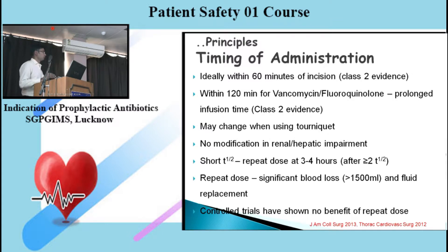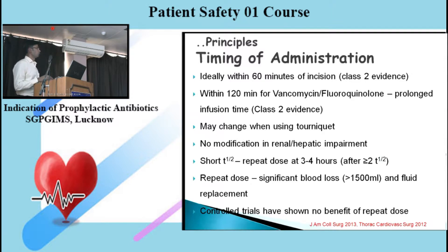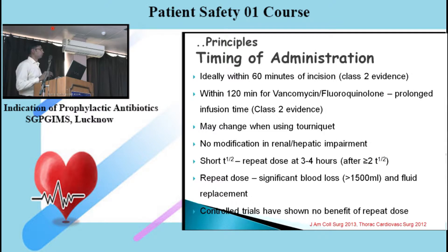There should be no modification in dose for renal or hepatic impairment because it is a single short antibiotic course and will not harm the kidney or liver. If the antibiotic has a short half-life — most cephalosporins have a half-life of 2 to 3 hours — the dose should be repeated after 3 to 4 hours, that is, after two half-lives. Dose should also be repeated when there is significant blood loss, considered to be more than 1,500 ml for an adult patient, as fluid replacement dilutes antibiotic levels — though this is based on consensus guidelines with Class 2 evidence.